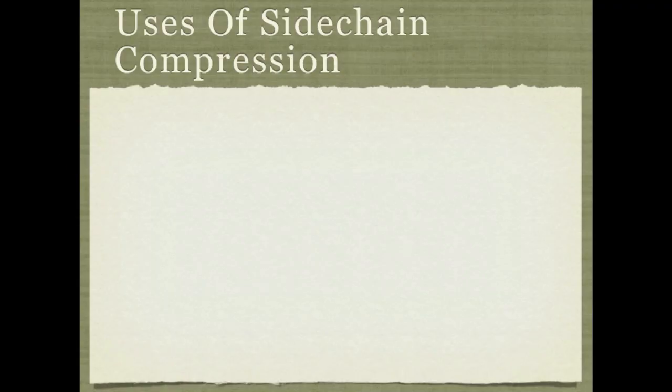This can be very useful, and there are three main things people commonly use sidechains for. The first is ducking, the second is de-essing, and the third is various special effects. Let's hear an example of each of these in turn.